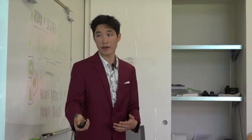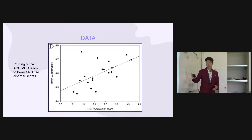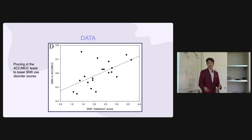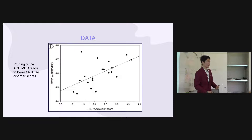Now let's move into the data. These are the graphs. On the x-axis we have the social networking site addiction score; on the y-axis we have the GMV in the ACC-MCC. This shows that when you prune the ACC-MCC — when you take gray matter volume away — you actually have a lower social networking site use disorder score. This positive association shows that as your ability to make cognitive decisions goes up, so does your social networking site use disorder score, meaning that when the ACC-MCC is able to function more effectively, your likelihood of becoming addicted to these sites goes up.